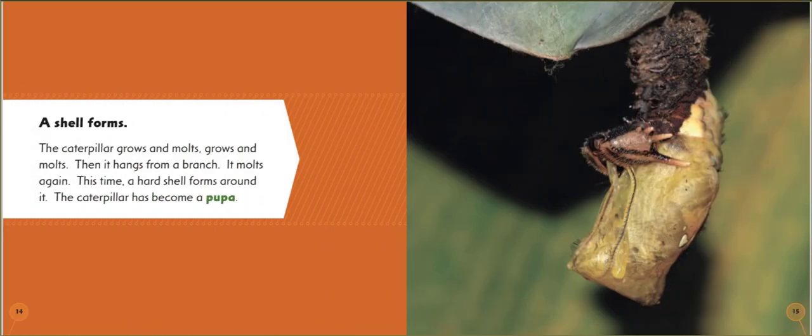A shell forms. The caterpillar grows and molts, grows and molts. Then it hangs from a branch. It molts again. This time a hard shell forms around it. The caterpillar has become a pupa.